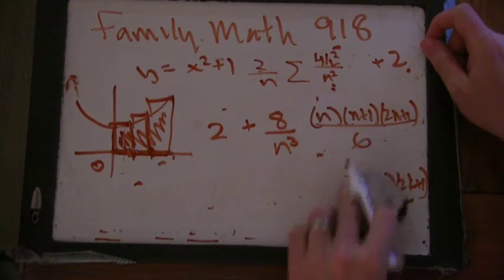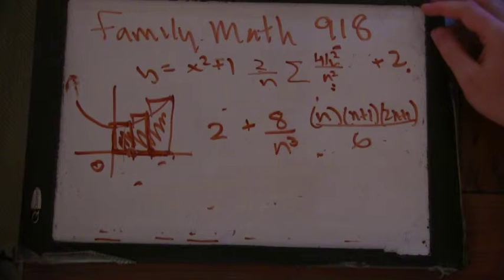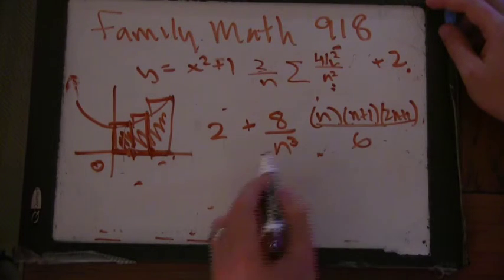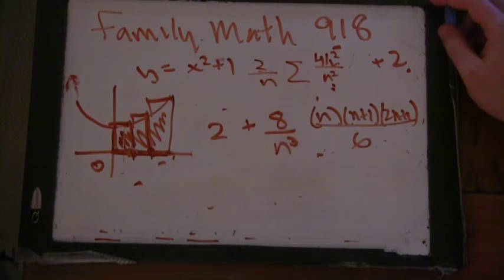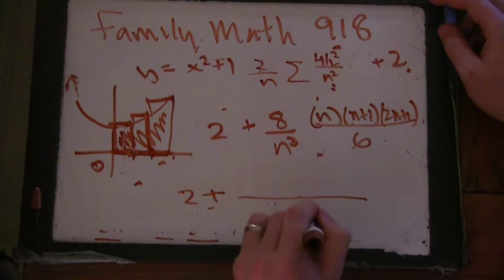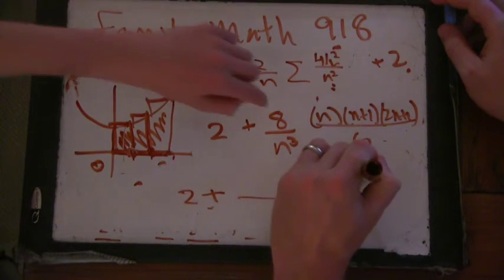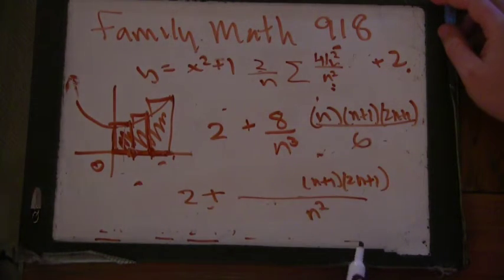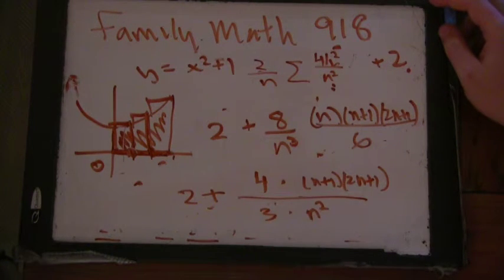Okay. All right. What can I do here? It's a little complicated, but I can still do a little bit. You can cancel n. Yeah. Can I cancel anything else? So I definitely am going to have an n squared on the bottom. And then n's going to go away, so I'm going to get an n plus one. And then you can cancel two from the eight and the six. So I get four thirds.